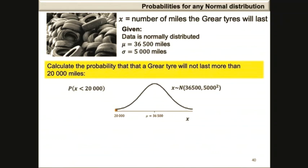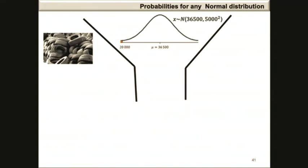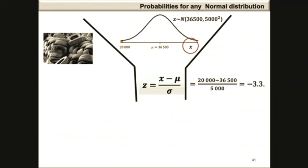This graph is in terms of x, so to obtain the probability we will need to use the standard normal probability distribution. The distribution in terms of x will be standardized by calculating a z-score: z equals x minus the population mean divided by the population standard deviation. In this case, it is 20,000 minus 36,500 divided by 5,000, giving a z-score of minus 3.3.